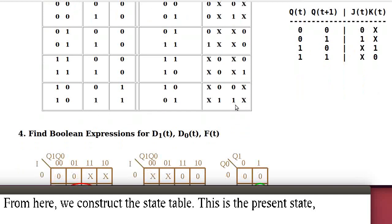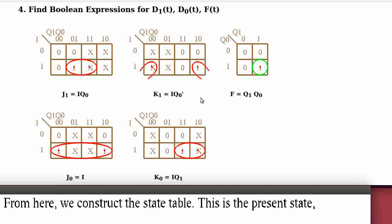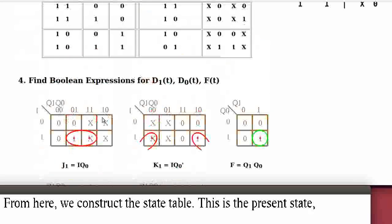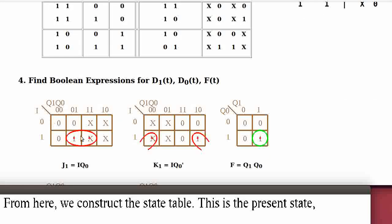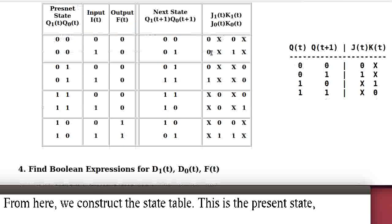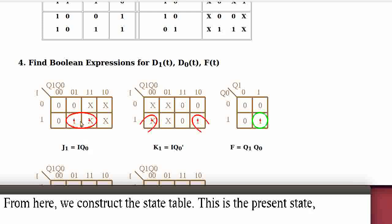From this completed table, we derive the Karnaugh maps. For J1, the entries are 0, 0, 0, 1, with all others don't care. Grouping the 1 terms, we get J1 equals I·Q0. For K1, the entries are don't care, don't care, don't care, don't care, 0, 0, 0, 1. Grouping these terms together, we get K1 equals I·Q0'.